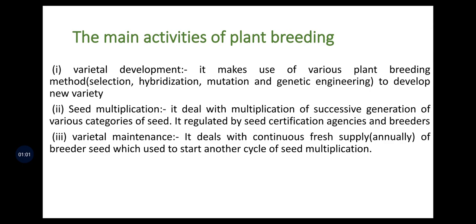In plant breeding, three activities are very important. First is varietal development, which makes use of various breeding methods like selection, hybridization, mutation, genetic engineering, etc., to develop a new variety.